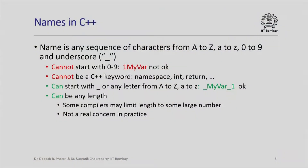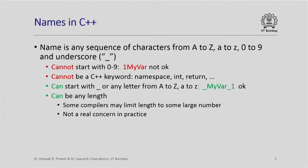A name in a C++ program is any sequence of characters where the characters could include any character from uppercase A to uppercase Z, lowercase a to lowercase z, the numbers 0 to 9, and you can also use the underscore character. However, when you are forming the sequence of characters, you have to remember a few do's and don'ts. For example, you cannot start a name with a digit like 0 to 9. For example, '1mybar' is not okay because it starts with the number 1.